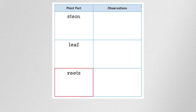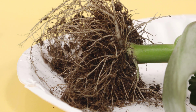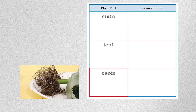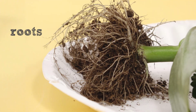Click on the Roots cell in the data table to observe the plant roots. What is the color and shape of the roots? Write the word Roots in the left column of your notebook and draw a picture of the roots below the word. When you're finished, click Continue.